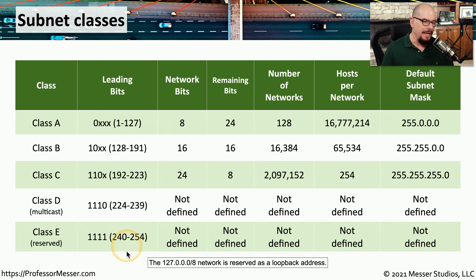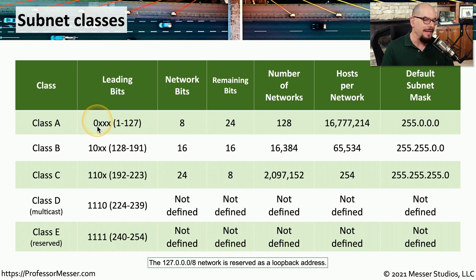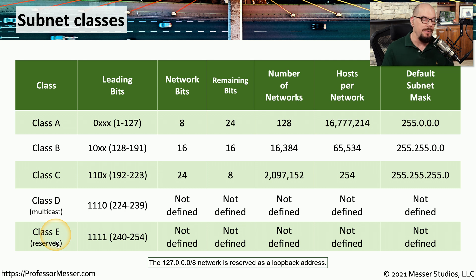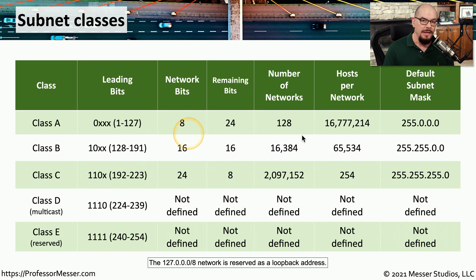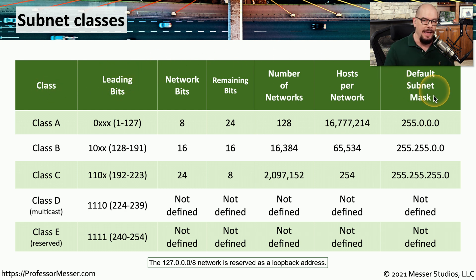What's interesting about all of these different classes is that if you convert that very first number to binary and look at just the first four bits, you'll find that anything starting with a 0 is Class A, anything starting with 1 0 is Class B, 1 1 0 is Class C, 1 1 1 0 is Class D, and all ones would be Class E. Back when subnet masks were automatically defined based on the IP address, the default subnet mask was configured accordingly. The three most important columns in the chart are the class, the leading bits, and the default subnet masks.